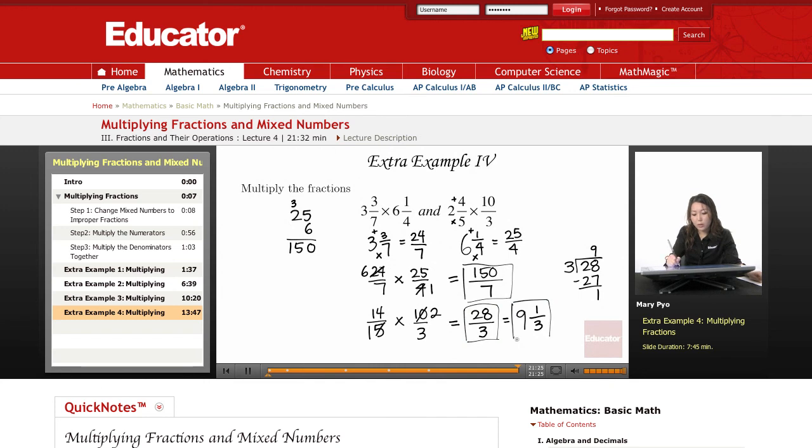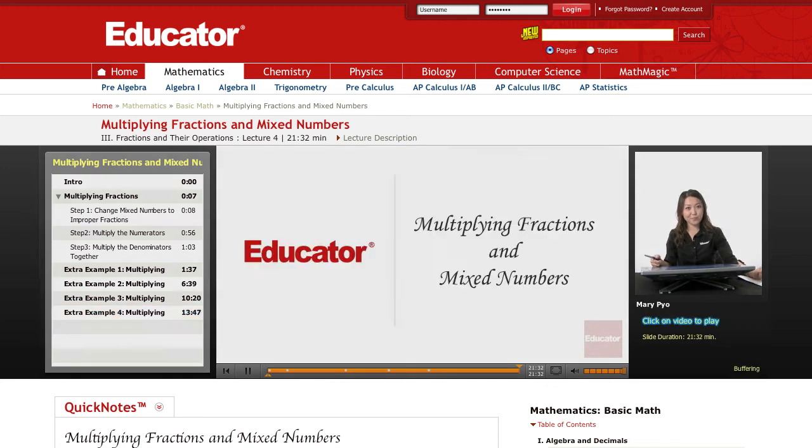So, 28 over 3. Or 9 and 1 third. They're both your answers. Well, that's it for this lesson. Thank you for watching. Educator.com.